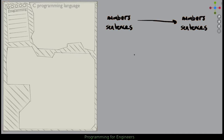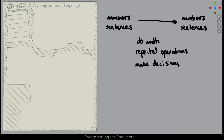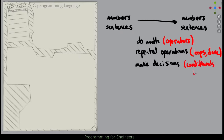In the middle, we want a couple of things. We want to be able to do math operations, repeated operations, as well as make decisions. These tie into specific things: operators, loops and functions, and conditionals such as if. That's what we want to be able to do, and with C we're able to do just that.